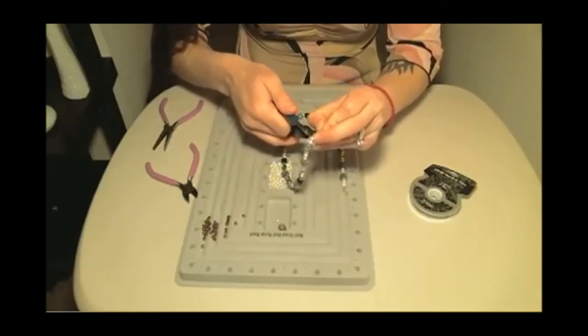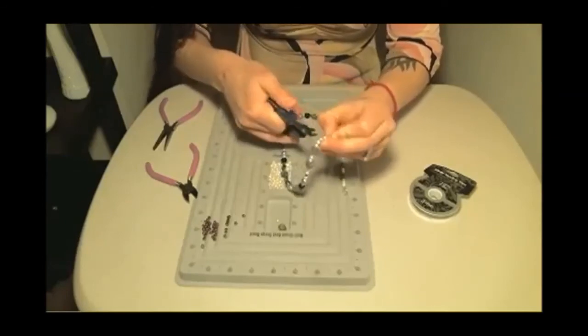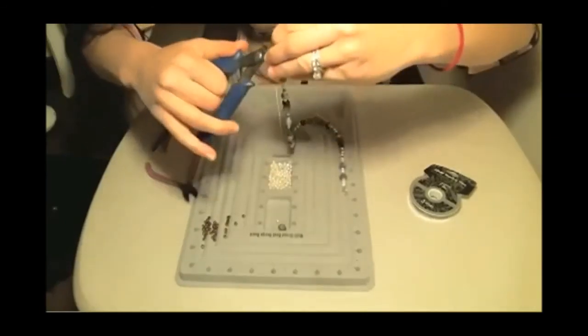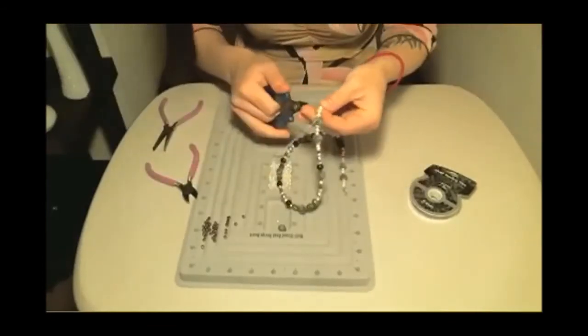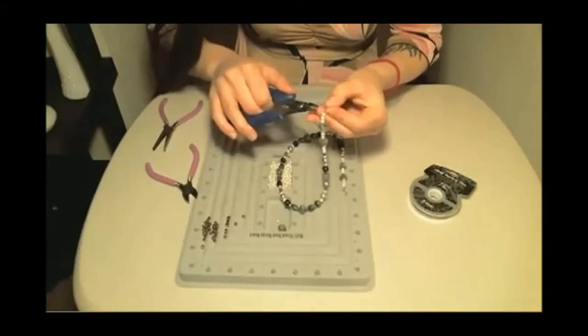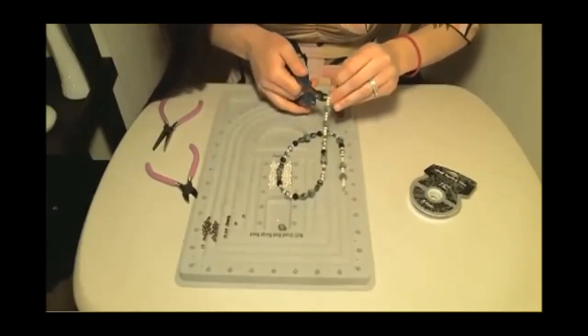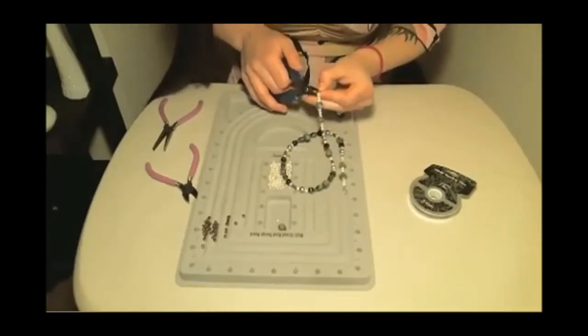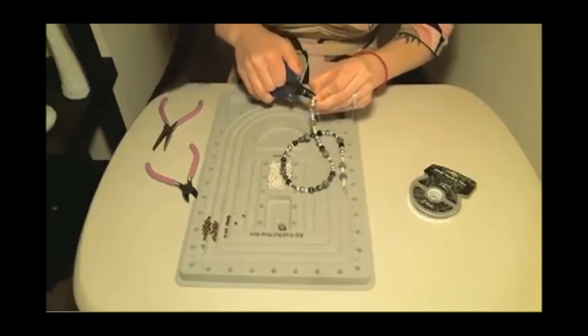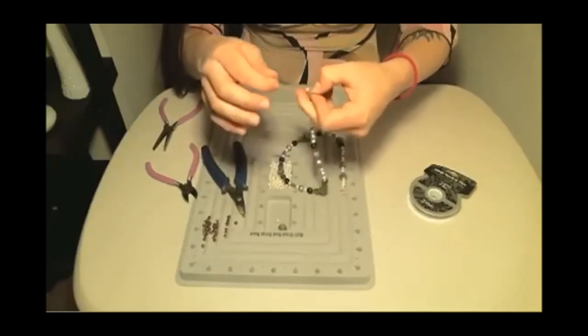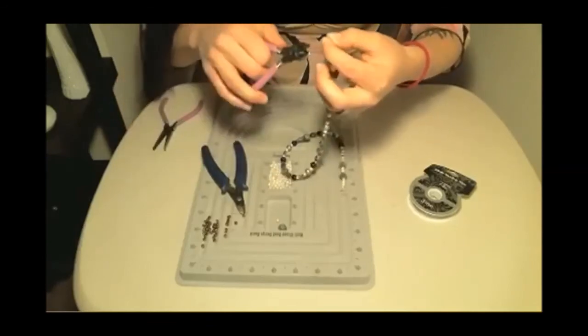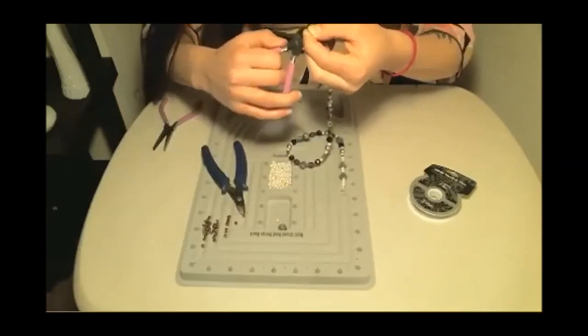And then just kind of squeeze it to make sure that it's fit so that it's tight. You don't want to squeeze it too much because then the crimp bead can just crack. And then the last thing to do is just snip the wire up real close.